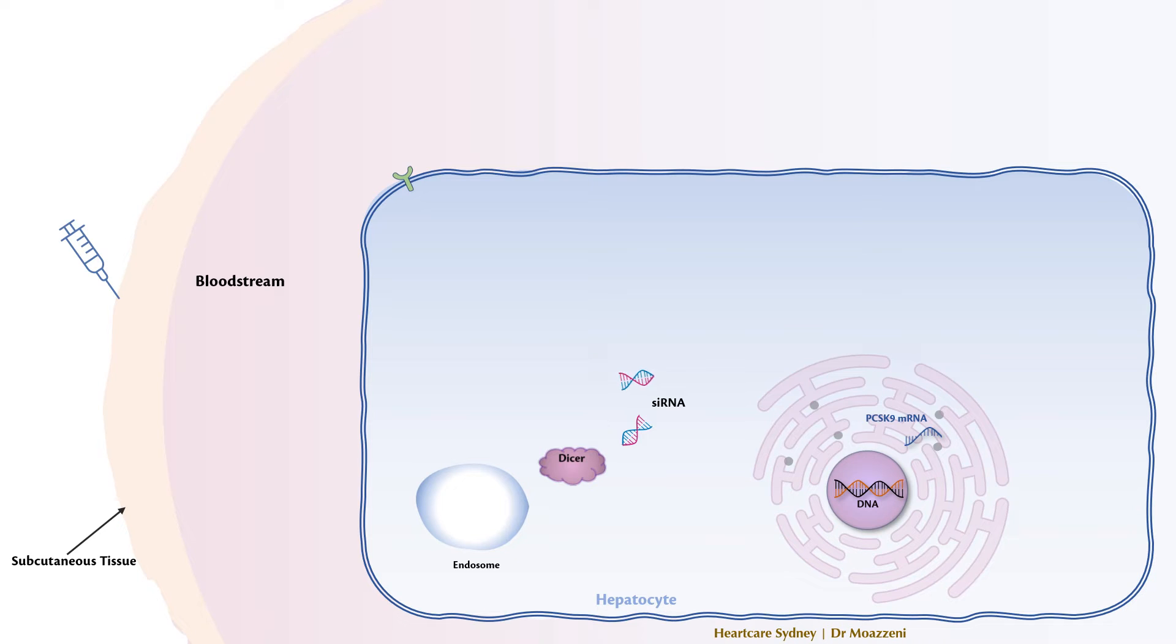These short RNAs are loaded onto the RISC complex, where the double-strand RNA strands are separated. The sense strand is degraded, and the antisense strand serves as a guide to locate PCSK9 messenger RNA.